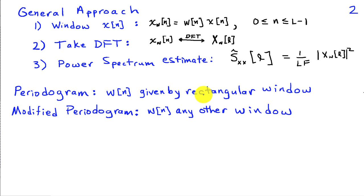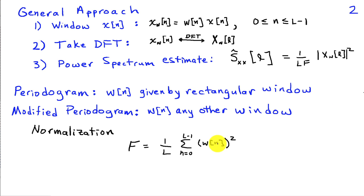We normalize by some quantity f, which depends on the window so we get the power right. When the window is a rectangular window, we call that the periodogram. If w of n is any other window, we call that a modified periodogram or a windowed periodogram. For the power to match up, the normalization factor f has to be 1 over L times the sum of the squares of the window applied to the data.